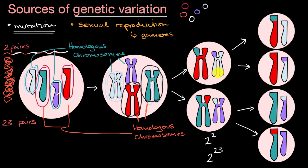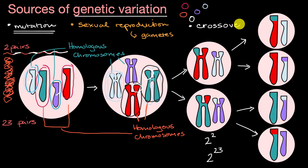On top of that, if you follow the colors, you can see that a little chunk of this chromosome got swapped with a little chunk of this chromosome — the red is now on the big blue X and the blue is now on the big red X. This is another source of genetic variation known as crossover. What it does is actually mix DNA between chromosomes. These are homologous chromosomes encoding the same genes, but now alleles that were sitting on the blue one could sit with the rest of the red one, and vice versa.